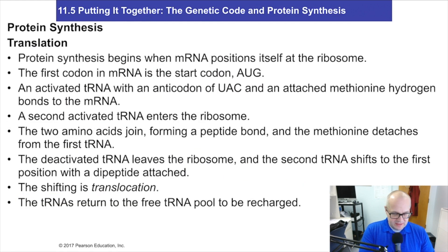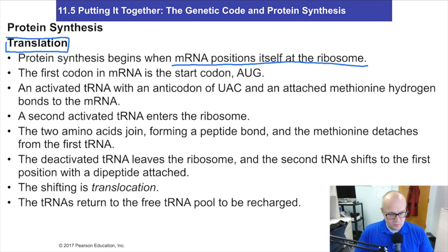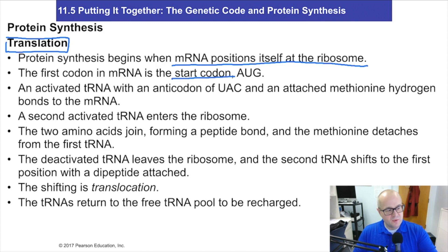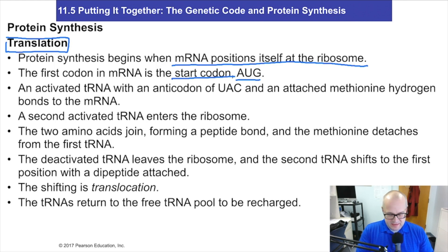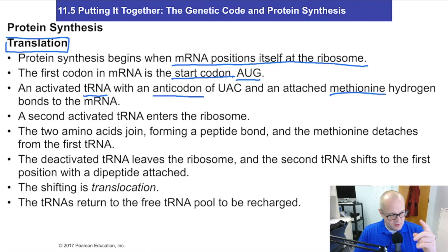Translation will occur. mRNA positions itself in the ribosome in a certain way, showing its codon. There's a special codon called the start codon that starts the process — that happens to be AUG. The activated tRNA with its anticodon — and it also has a methionine attached — its anticodon will bond through hydrogen bonding to interact with mRNA.